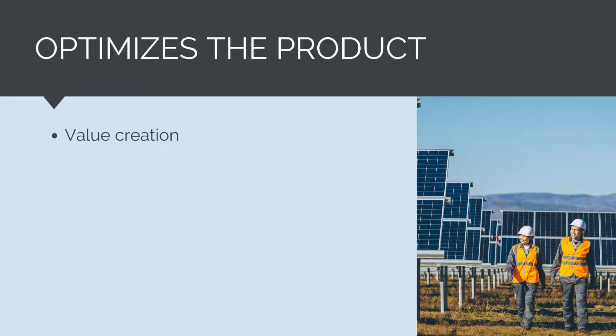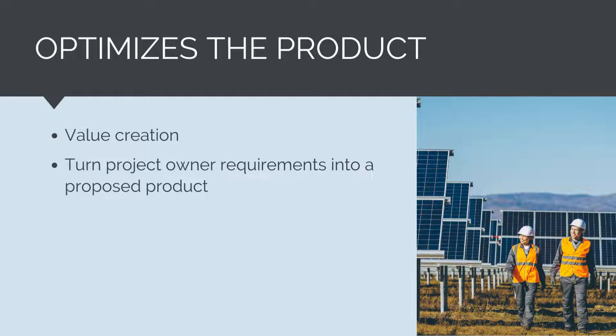Design development is the value creation process. Through engineering design, a project owner's needs and requirements are turned into a proposed product. The design is the technical solution that meets a project owner's requirements. Through the design development process, thousands of decisions about what to or not to include into the project scope are made. Imagine a seemingly homogenous project like a solar farm. At first glance, each solar farm appears to be the same, just adjusted for a couple of key parameters like size. In reality, thousands of key design decisions were made during the design development process that each have a key impact on project outcomes.